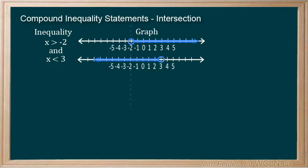So, only the part of each number line that intersects is part of the solution. Here's the only place where the values are true for both inequality statements. Check this with 0 for example. 0 is both greater than negative 2 and less than 3.